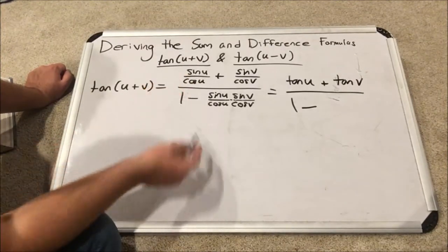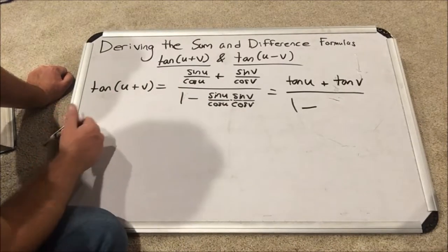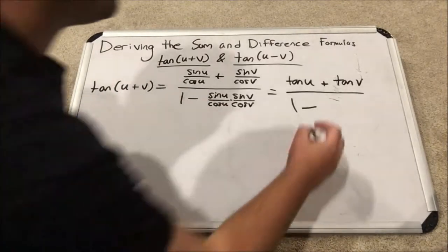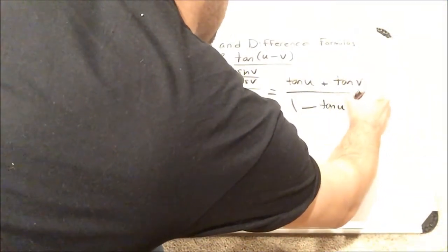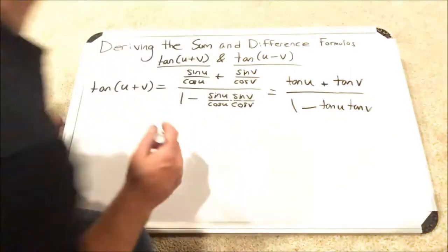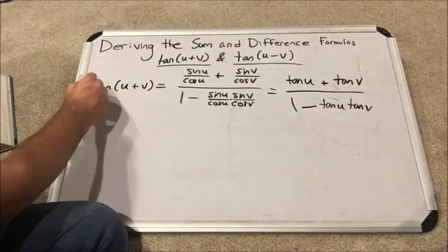And same with the second fraction, sine v over cosine v, that's tangent v. So you have one minus tangent u tangent v. We have derived the formula for tangent u plus v.